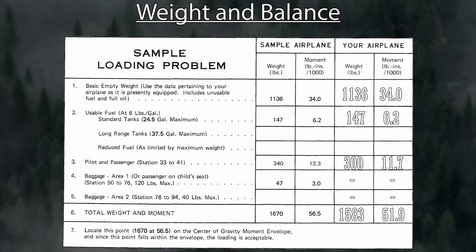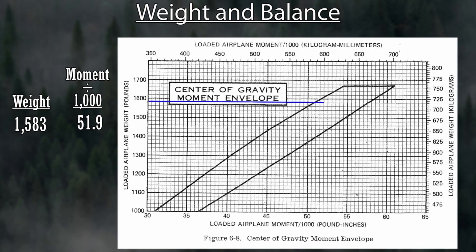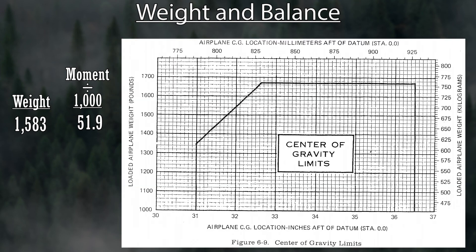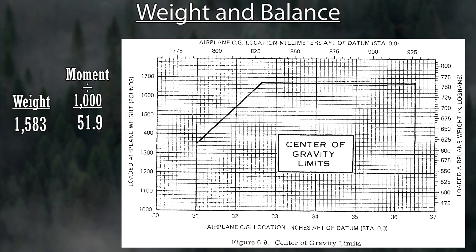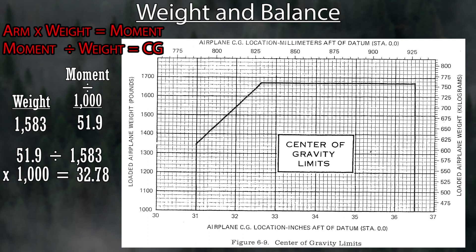In this Cessna 152 POH, there's a center of gravity moment envelope. Taking our weight of 15.83 and our moment of 51.9, you can see we are within the moment envelope. There's also a center of gravity limit chart. To find the CG, take your moment divided by your weight — keep in mind the moment is divided by 1,000, so multiply the result by 1,000. That gives a CG of 32.78, which plots in the top left corner of the graph.